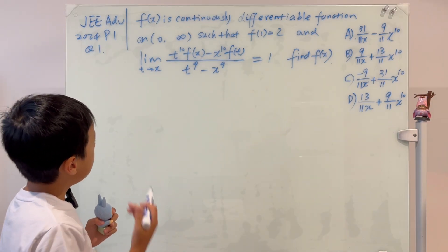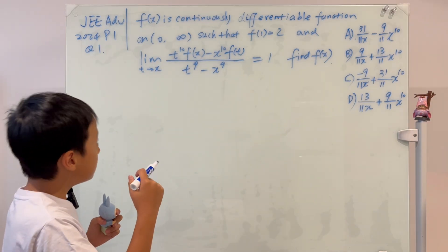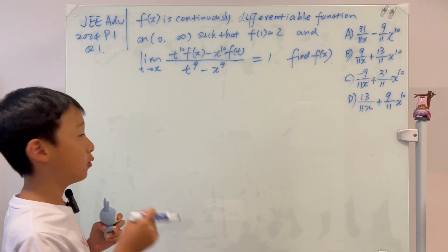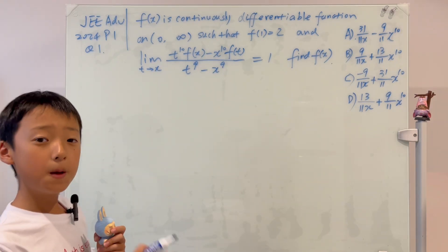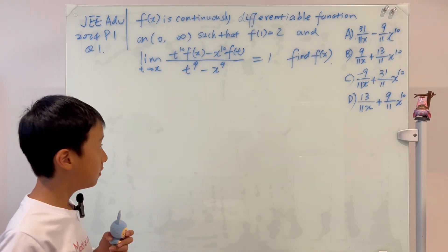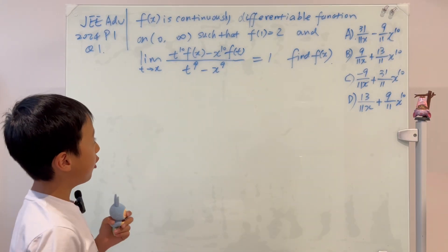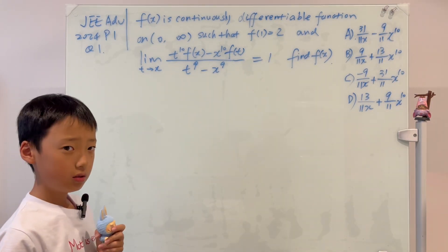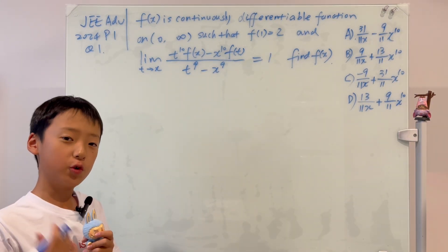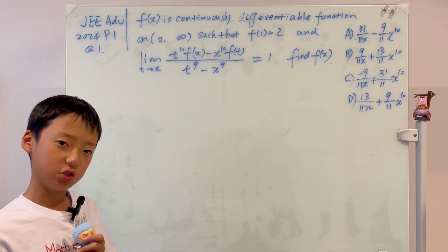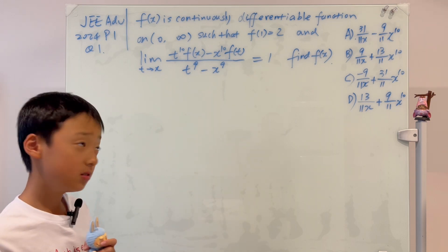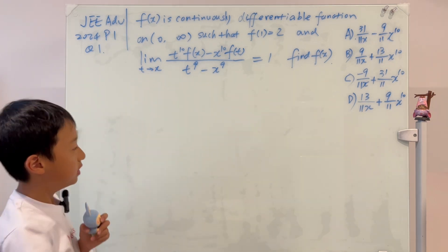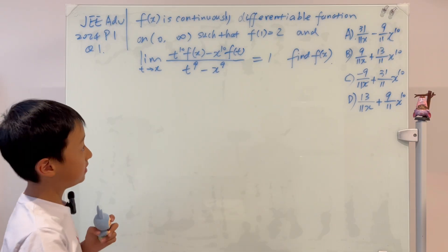f(x) is a continuously differentiable function on (0, ∞), not inclusive, such that f(1) = 2. That sounds like an initial condition for a differential equation, right? And this big limit is equal to 1.